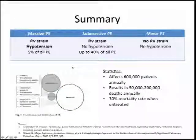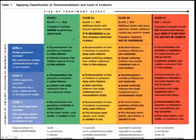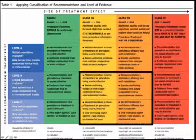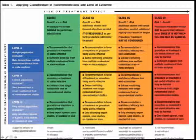Massive PE is associated with hypotension; submassive and minor PE are not. Management focuses on systemic and catheter-directed thrombolysis because that's where the major contention lies. There is only one randomized clinical trial for CDT — the ULTIMA trial — with a couple more in progress. Most catheter-directed therapy data represents limited populations, consensus opinion, and lacks randomized controlled trial support. Systemic thrombolysis data is in the middle of the evidence quality spectrum.